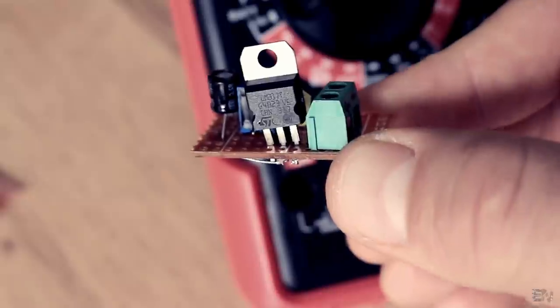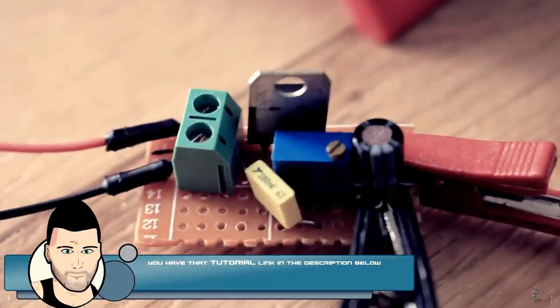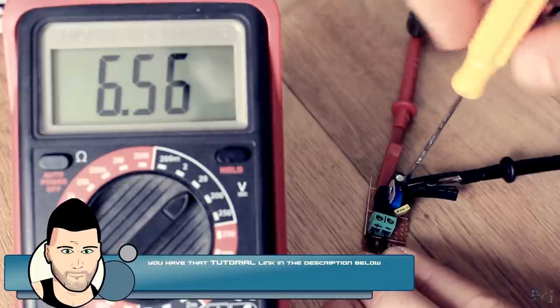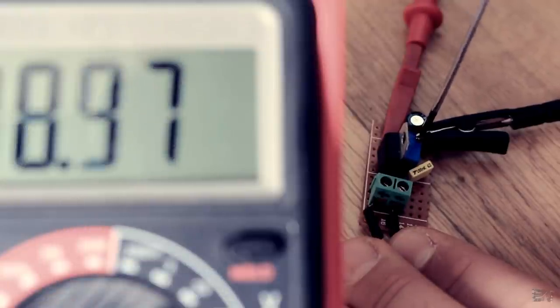In a past video I've shown you how to make this variable voltage regulator with the LM317. Using the potentiometer I can fix any voltage at the output. Watch that video for more.